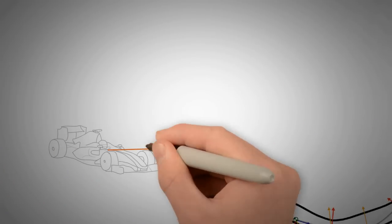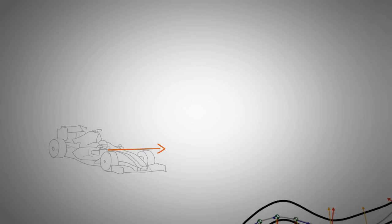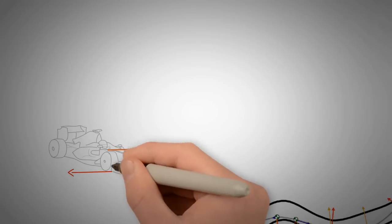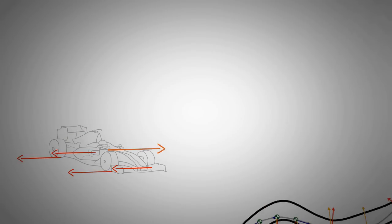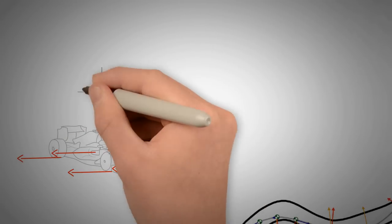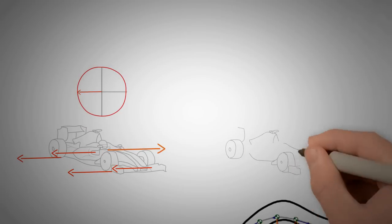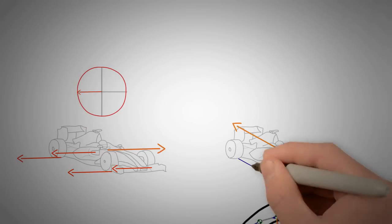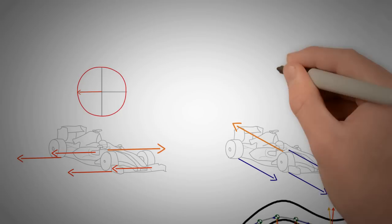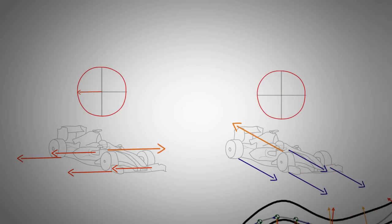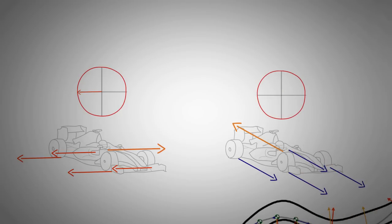When the car is cornering without power or braking applied, the lateral forces generated at the tyre contact patches keep it in the trajectory, and we will only have a lateral component on the tyre-to-road interaction force. On the other hand, when the car is under power or braking in a straight line, the forces between the tyre and the road have only a longitudinal component.